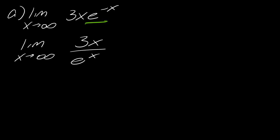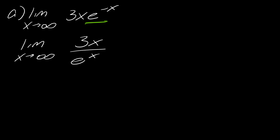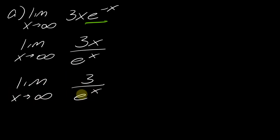This slight change makes the problem different. Now, as x goes to infinity, the top goes to infinity and the bottom also goes to infinity, giving the ∞/∞ form. Taking the derivative of the top and bottom gives 3 over e^x. The denominator is going towards infinity, so the value of the whole expression equals 0.